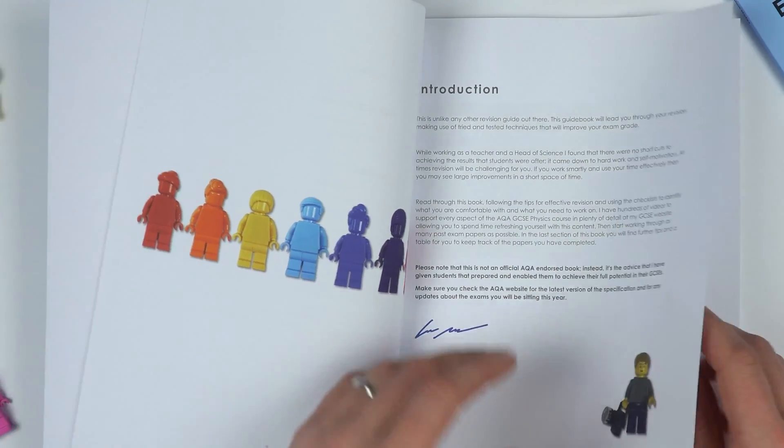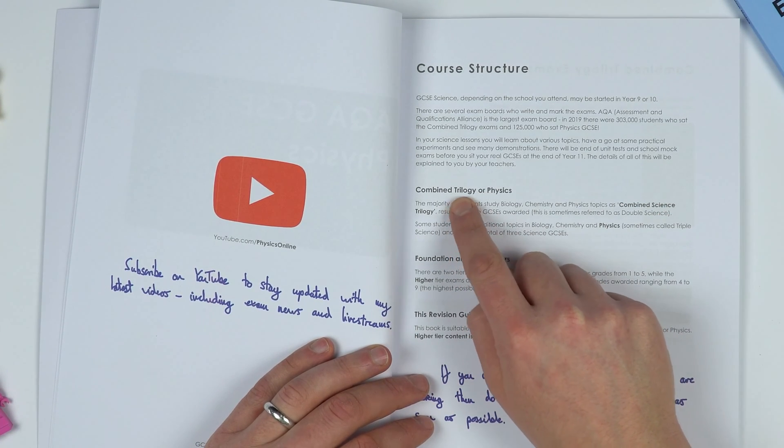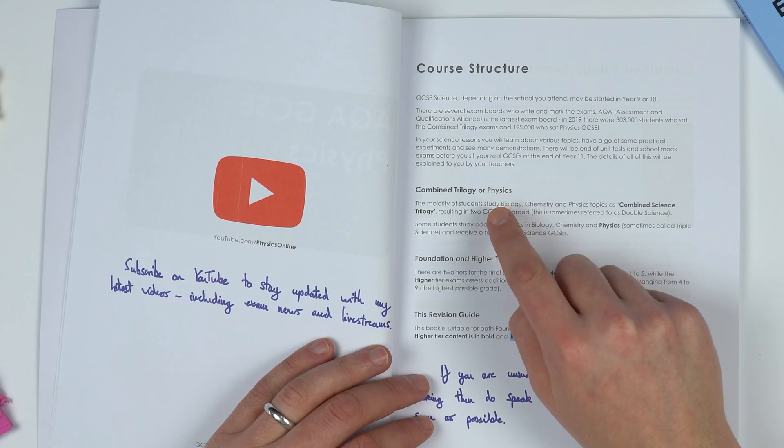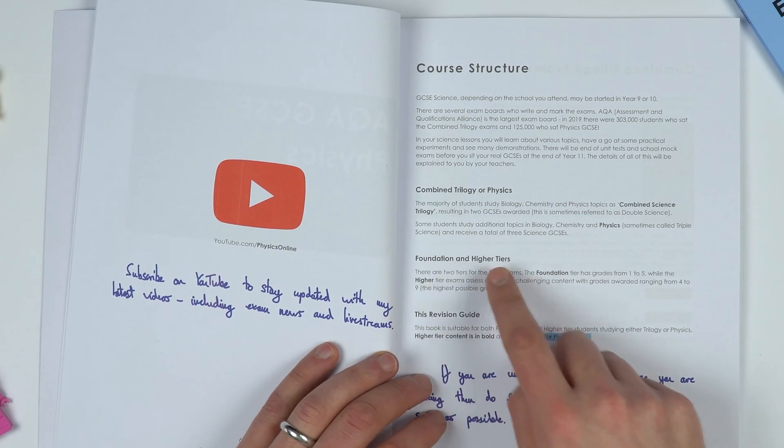As you get the guide, you can learn more about the GCSEs you're studying. It's suitable for both trilogy, which is the combined award where you get two GCSEs at the end, or physics, which is often called triple science. This guide is also suitable for foundation and higher tier students.